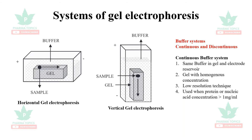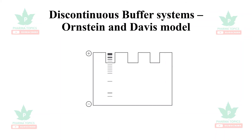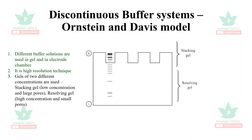The continuous buffer system is used when protein or nucleic acid concentration is greater than 1 mg per mL. The most widely used system is the discontinuous buffer system, one model being the Ornstein and Davis model. It has two types of gels: a stacking gel and a resolving gel, with differential buffers in the gel and electrode chamber. It is a high resolution technique — the stacking gel has low concentration with larger pores, and the resolving gel has high concentration with smaller pores.